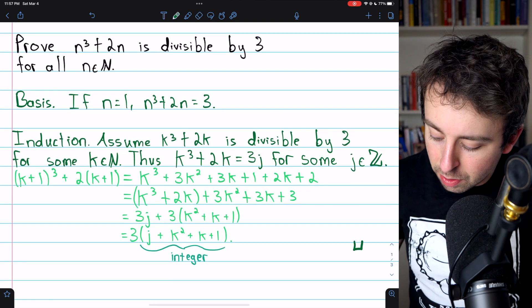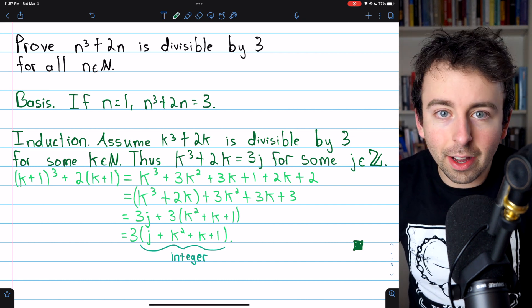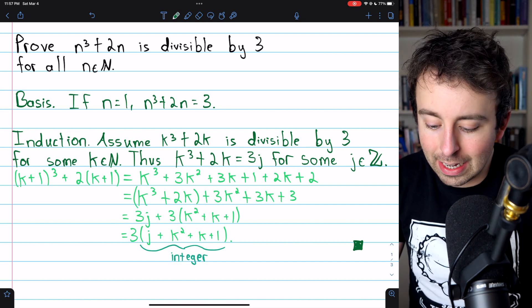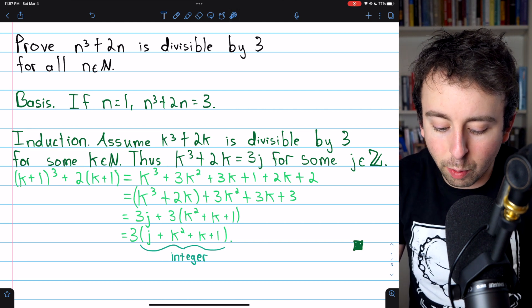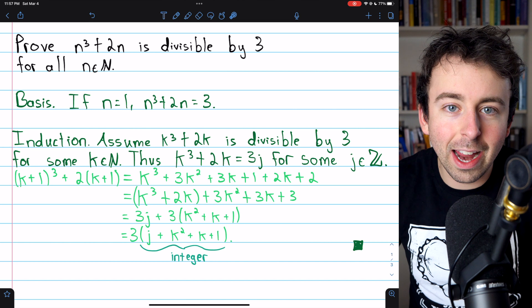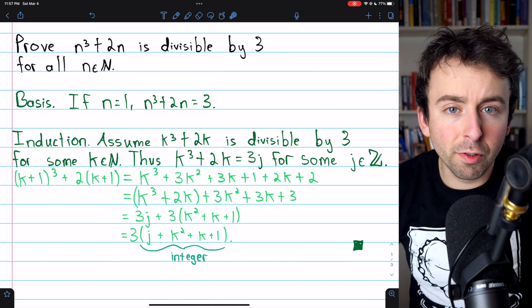And that concludes the proof. You may want to put in one last statement saying, thus, by the principle of mathematical induction, n cubed plus 2n is divisible by 3 for all positive integers n. But this is the argument complete. That is a basic proof by induction.